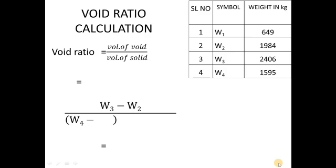Void ratio. It is a ratio of volume of voids to the volume of solids. And that can be calculated using this equation. And substituting the values for W1, W2, W3 and W4.